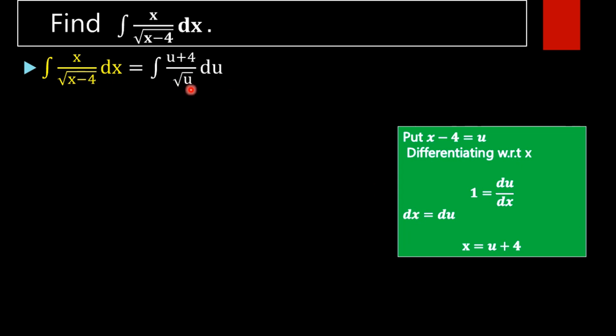So we get x minus 4 equal to u, and dx equal to du. What about x? x equal to u plus 4. So we get our function like this. This function is in an integrable form. If we put x minus 4 equal to u, then the denominator becomes — the function becomes into an integrable form.